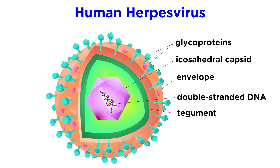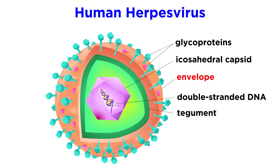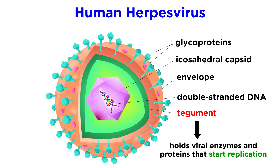In the case of human herpes viruses, they take this a step further. The DNA core is surrounded by an icosadeltahedron structure — if you've ever seen a soccer ball, that's an icosadeltahedron. This soccer ball-shaped capsid is then enclosed by an envelope that contains glycoproteins. These glycoproteins help the virus attach to their host, fuse with the host membrane, and escape control by the host immune system. The space between the envelope and the capsid is called the tegument, which holds viral enzymes and proteins that help kickstart replication once inside a host cell.